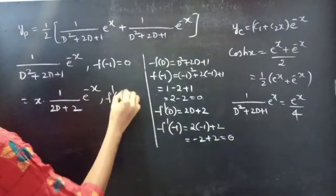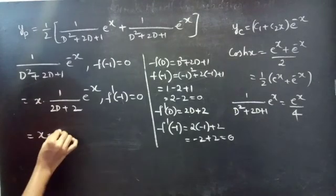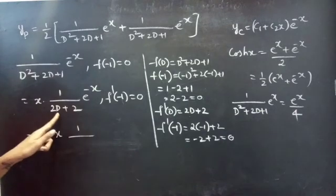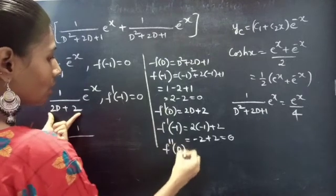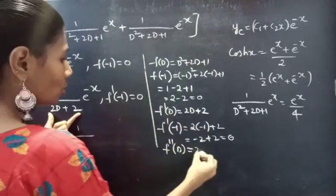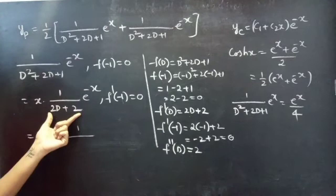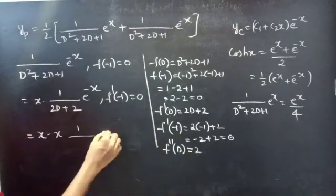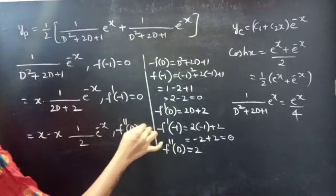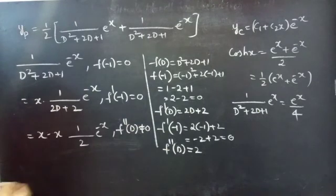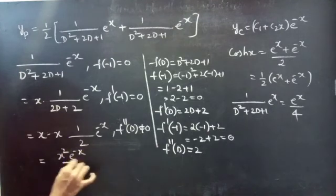Since f'(-1) = 0, we already have one x, so we write x² · (1/f''(D)) · e^(-x). Find f''(D): the derivative of 2D + 2 is 2, which is a constant, so f''(D) = 2. Since f''(D) = 2 ≠ 0, we get x² · e^(-x) / 2.